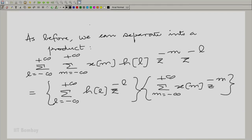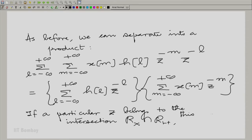We can now separate this into a product. And once again, it is very clear that if a particular Z belongs to the intersection, if a particular Z belongs to the intersection R_X intersection R_H, this product definitely converges for that Z.